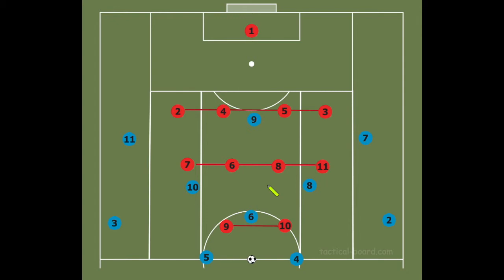One of the basic principles of zonal defending is forming defensive lines. In this example, the red team is defending in a 4-4-2 formation, therefore we have a defensive line with our four defenders, a midfield line with our four midfielders, and a forward line with our two forwards.